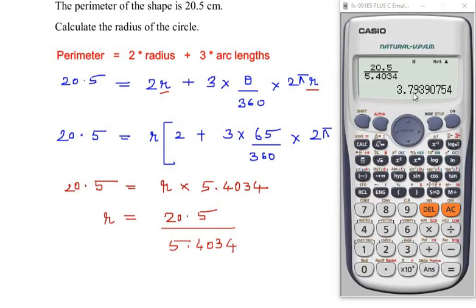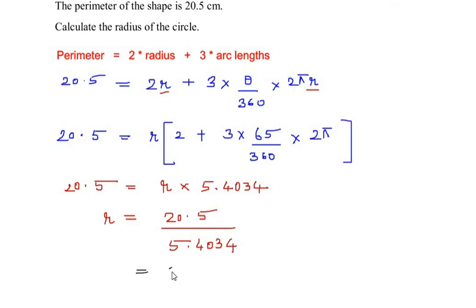So we get the radius as 3.7939. I'm going to consider the answer till two decimal places, so it is going to be 3.79. Let me write here: the radius is 3.79 centimeters.